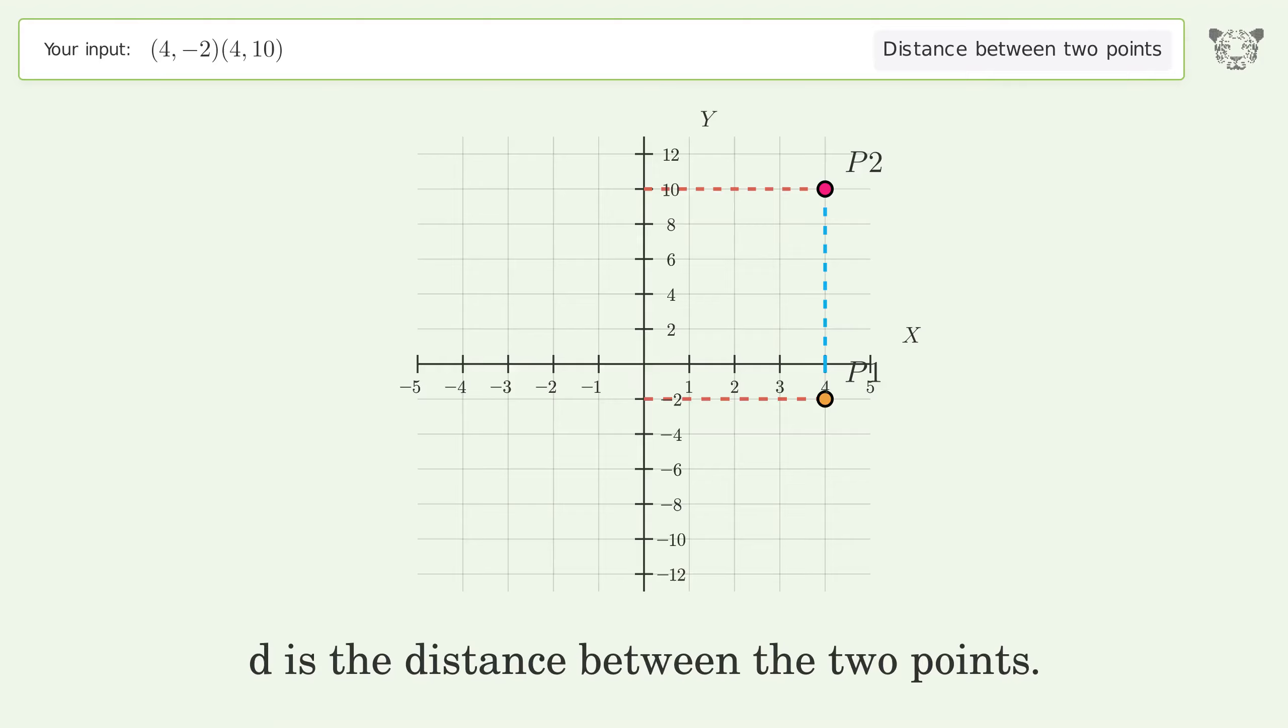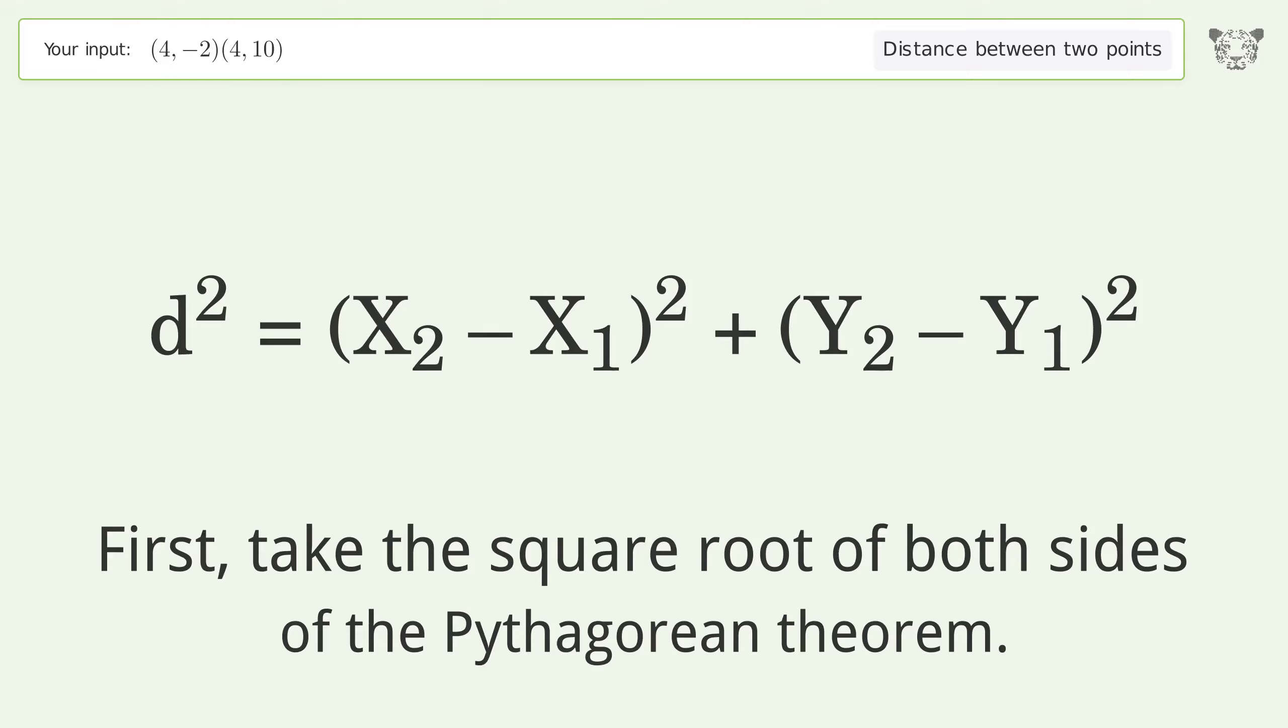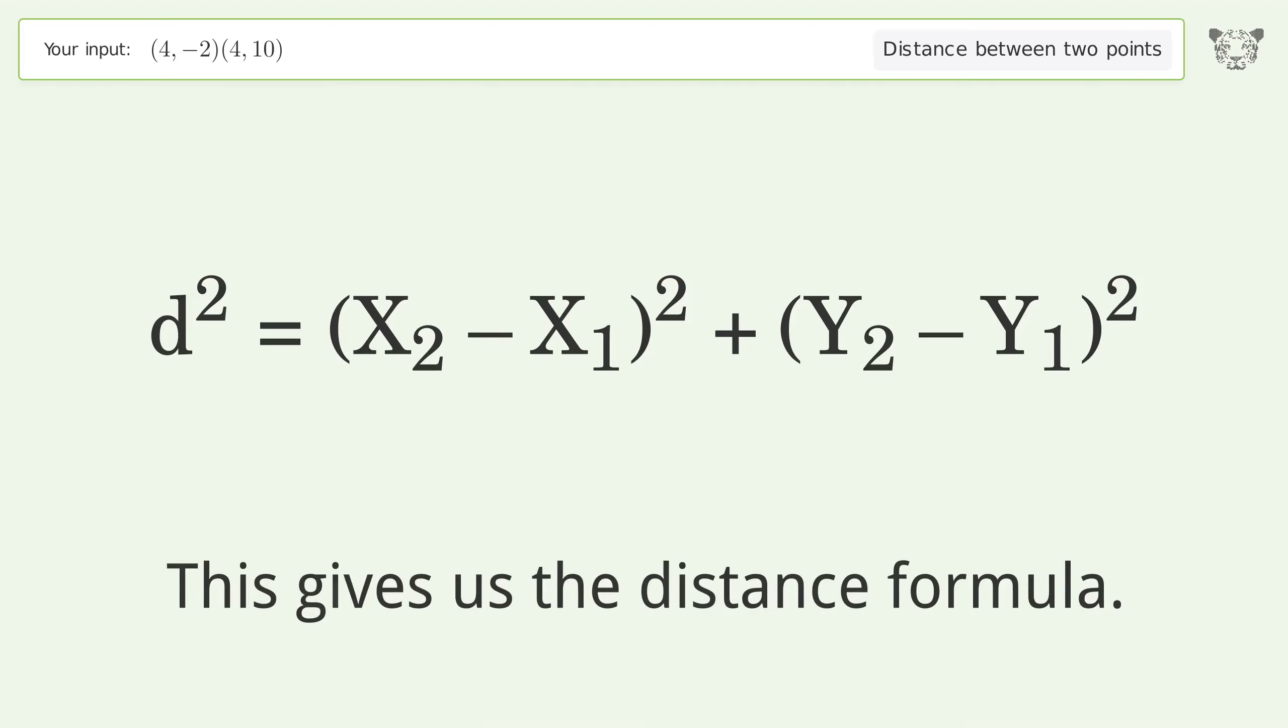d is the distance between the two points. First, take the square root of both sides of the Pythagorean theorem. This gives us the distance formula.